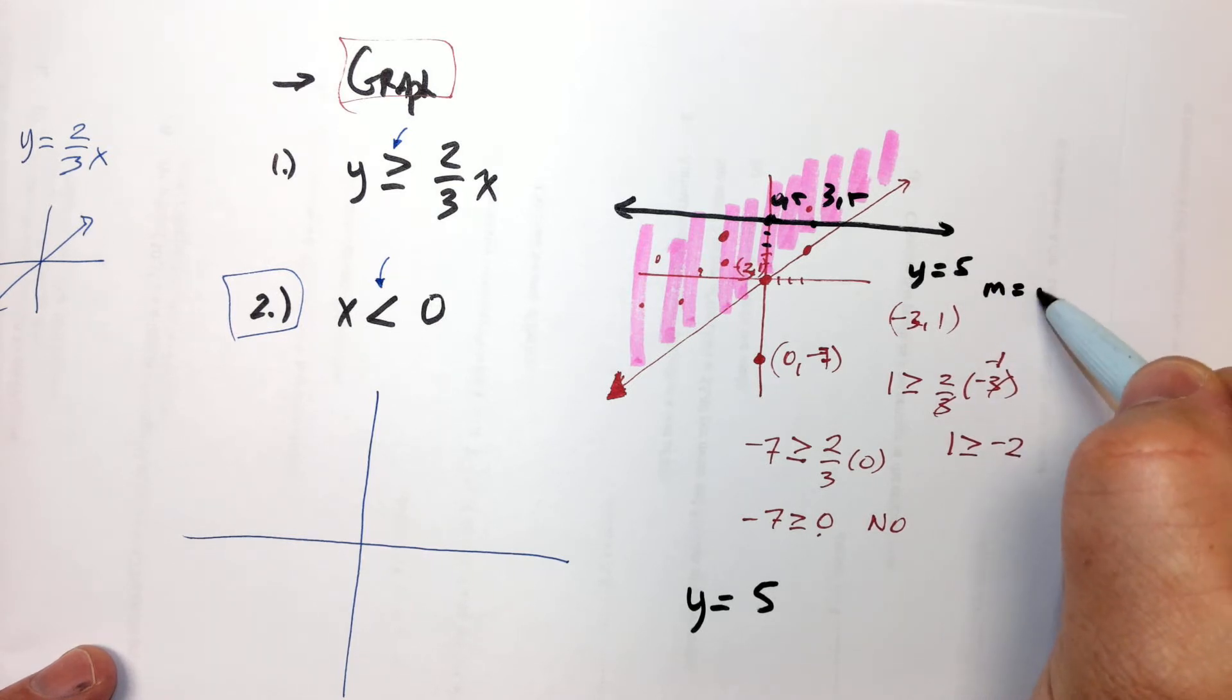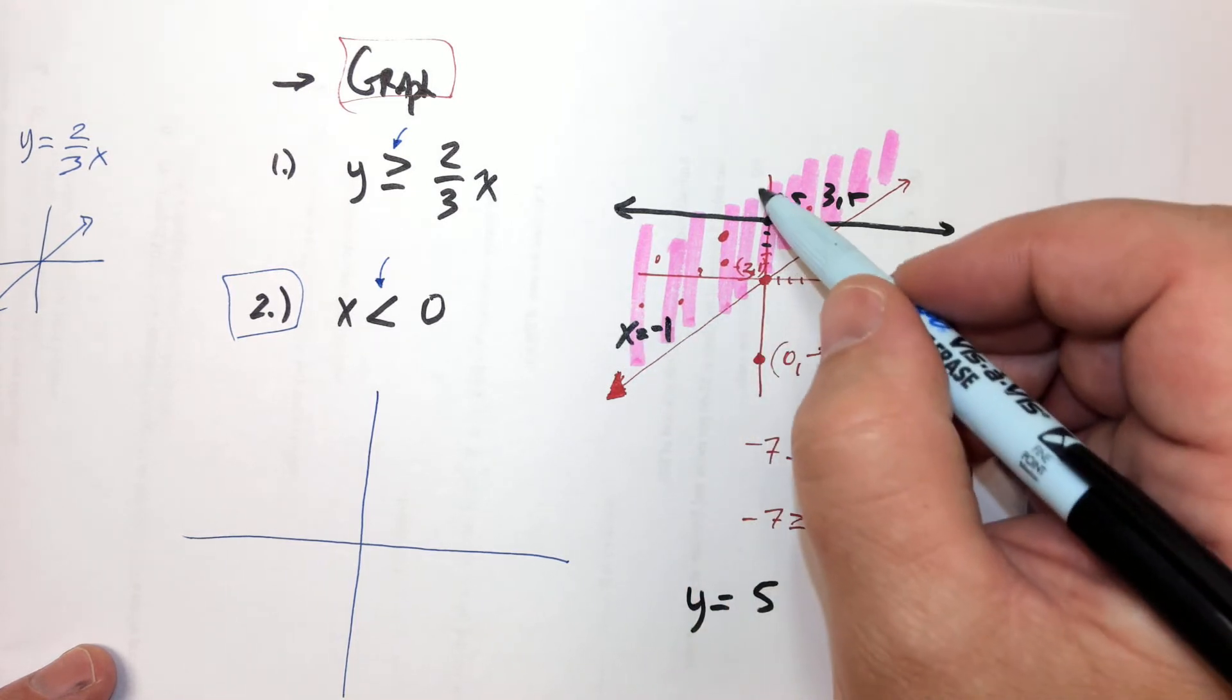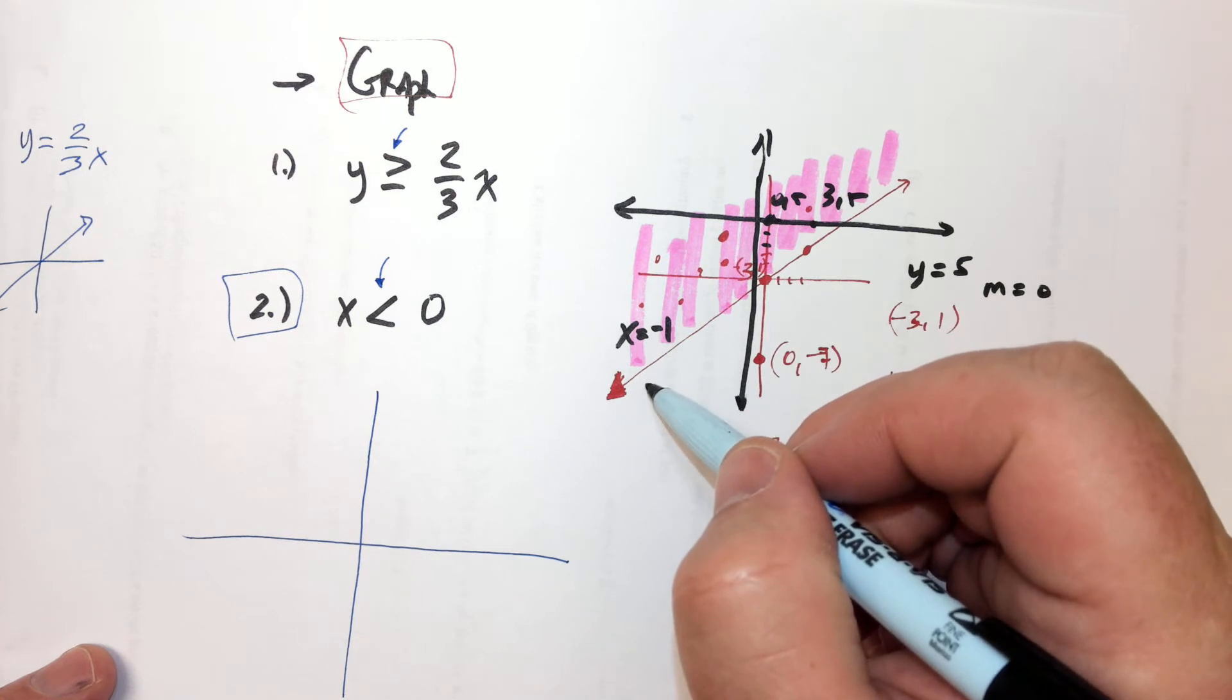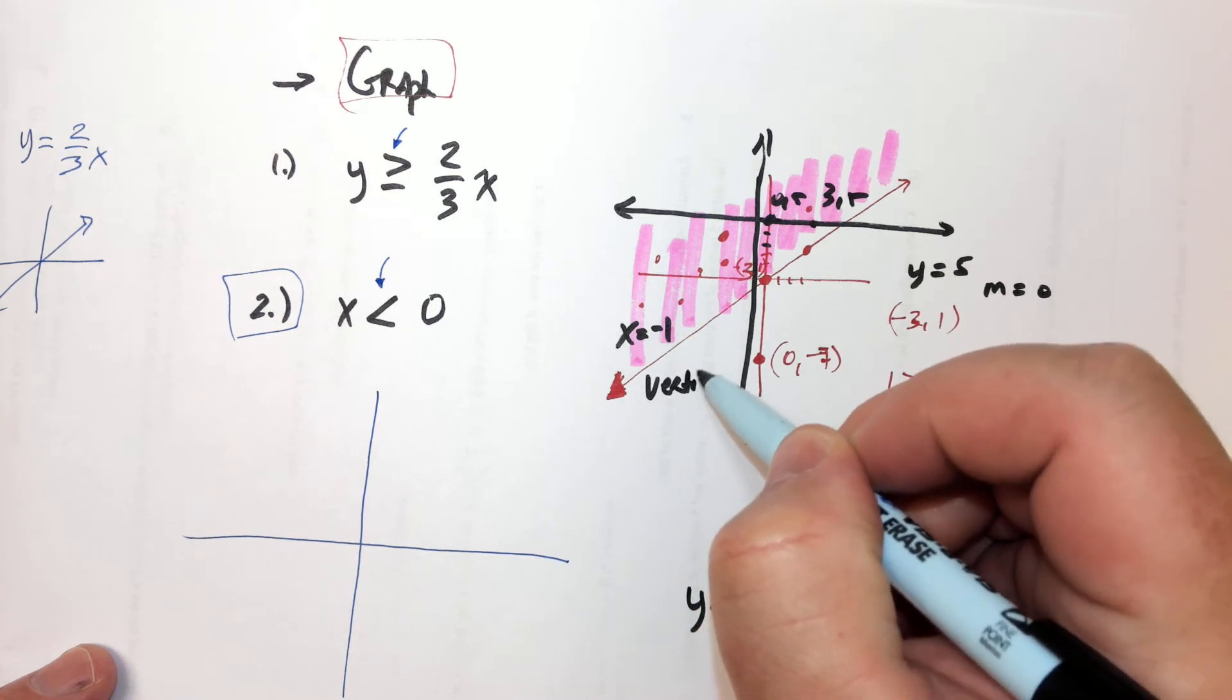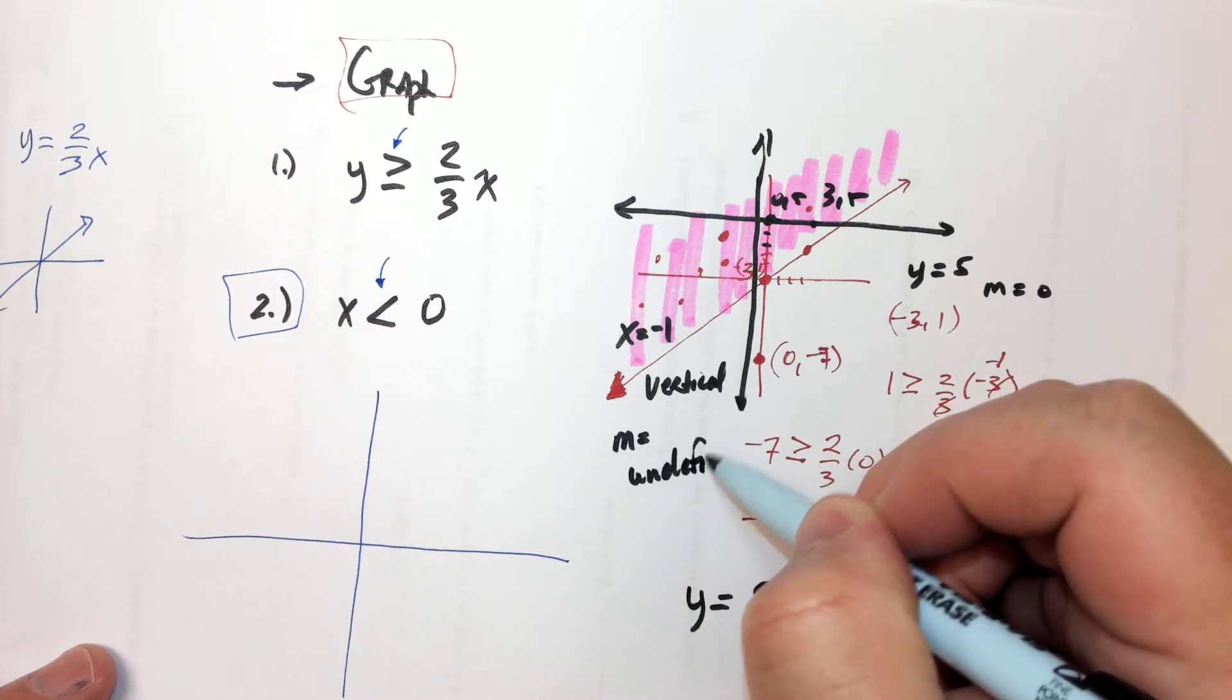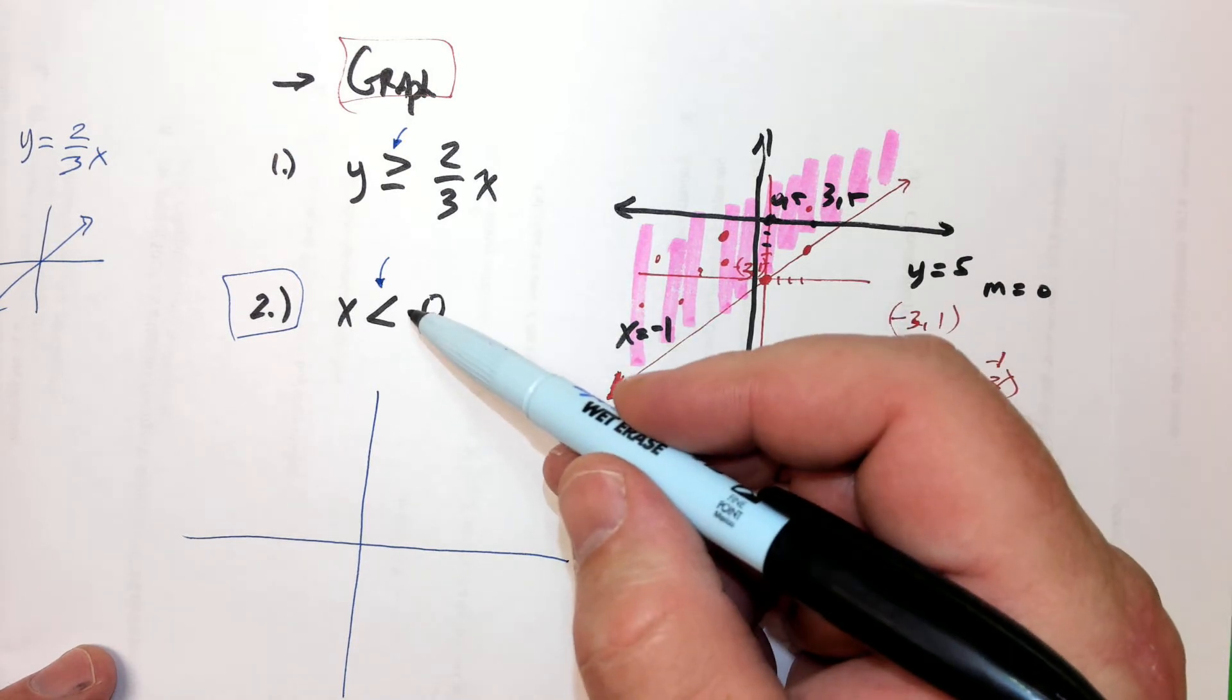And it's going to have a slope of zero. But x equals a number like negative one, it's going to be on the x-axis. It's going to be vertical, and it's going to have a slope that's undefined. It's not going to have a slope. So this is actually the y-axis.